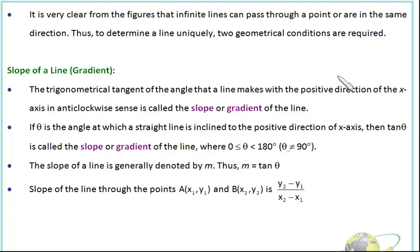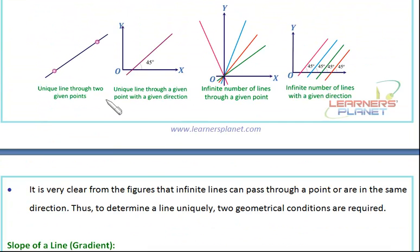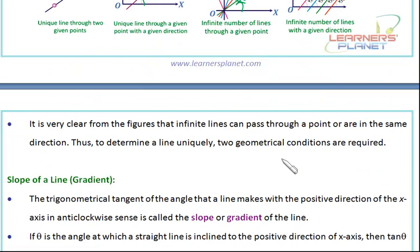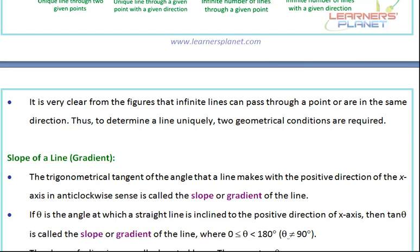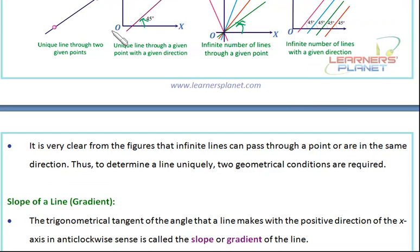The trigonometric tangent of the angle that a line makes with the positive direction of the X-axis in the anticlockwise sense is called the slope of the line. This is the slope of the line. This is the positive direction of the X-axis and we have to go in the anticlockwise direction. This angle, and the tangent of this angle, will actually be the slope.